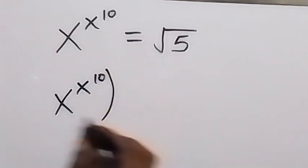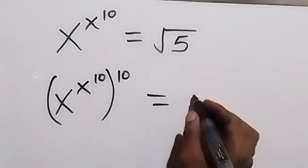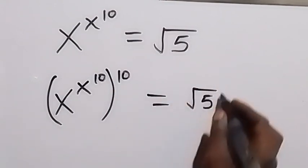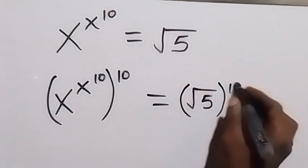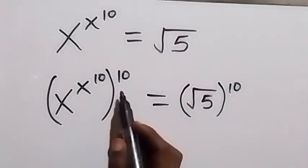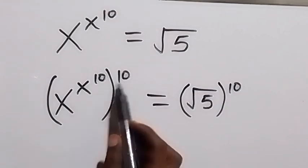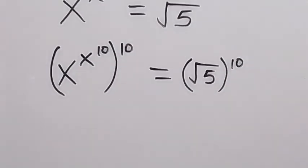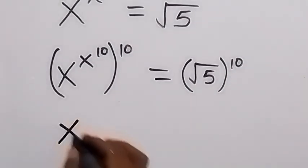Then we raise this side to the power of 10, which equals this side as well. We have the square root of 5, and we raise this side to the power of 10. Then from here, when we apply the law of indices, the powers multiply — so we can write this as x raised to the power of 10.